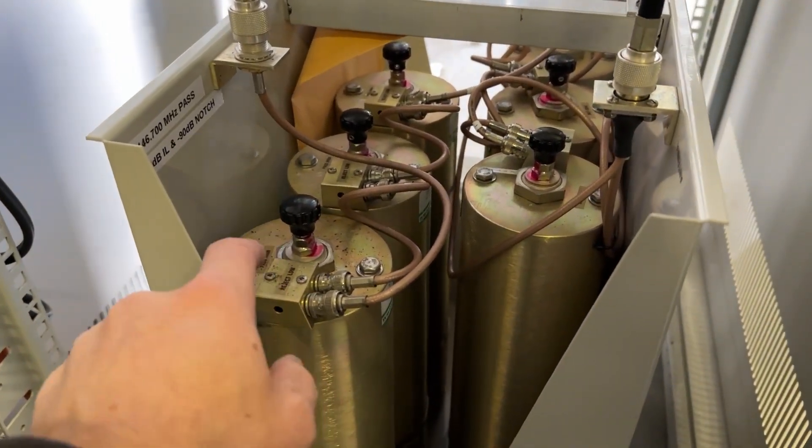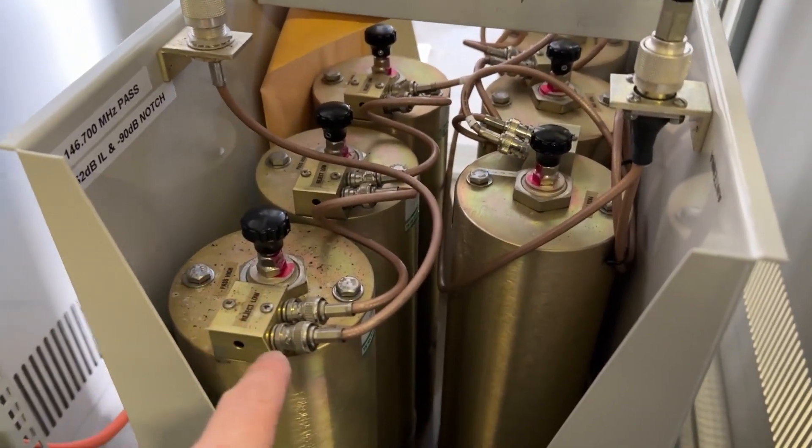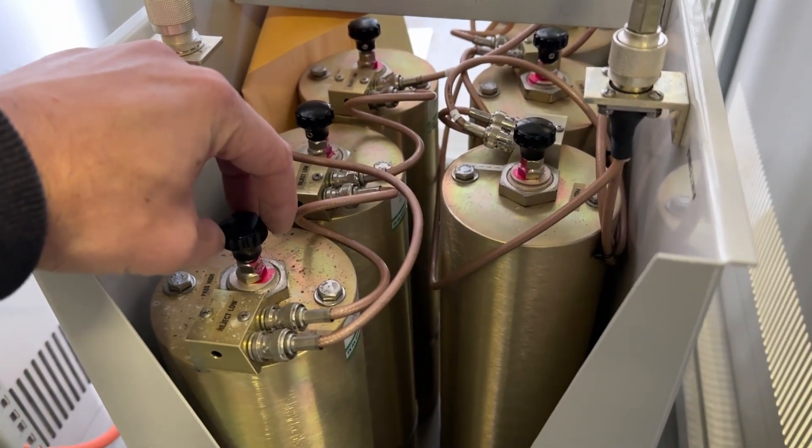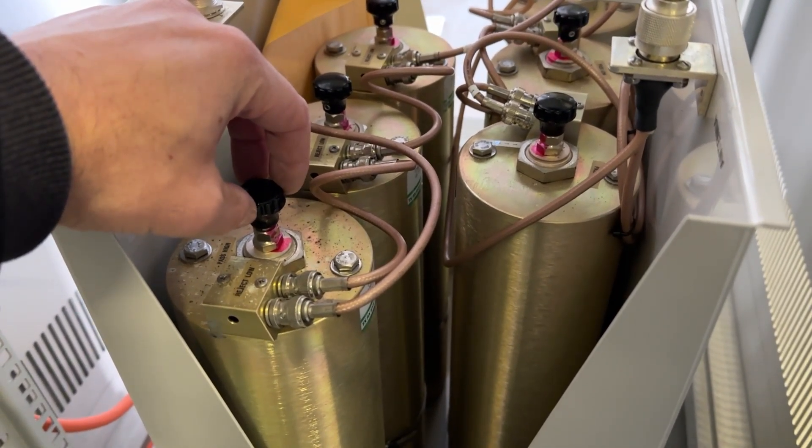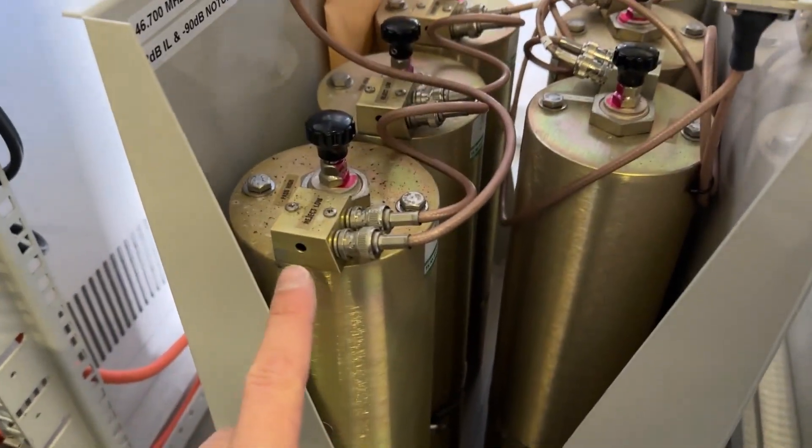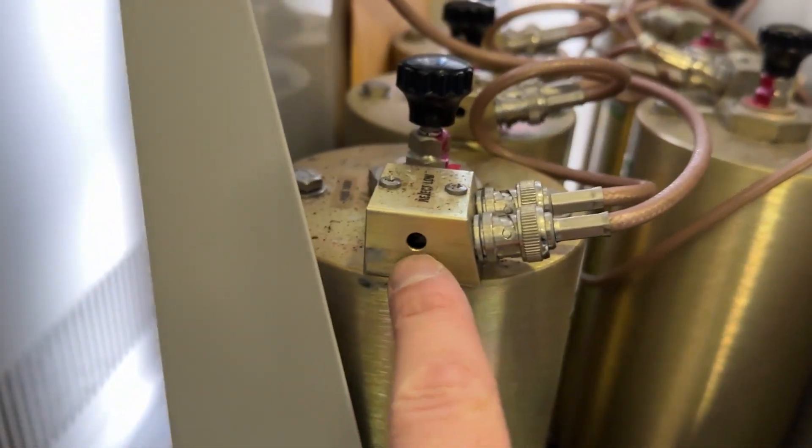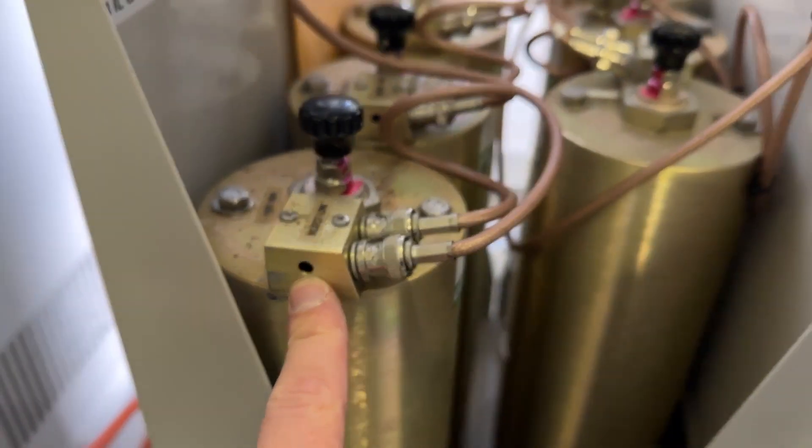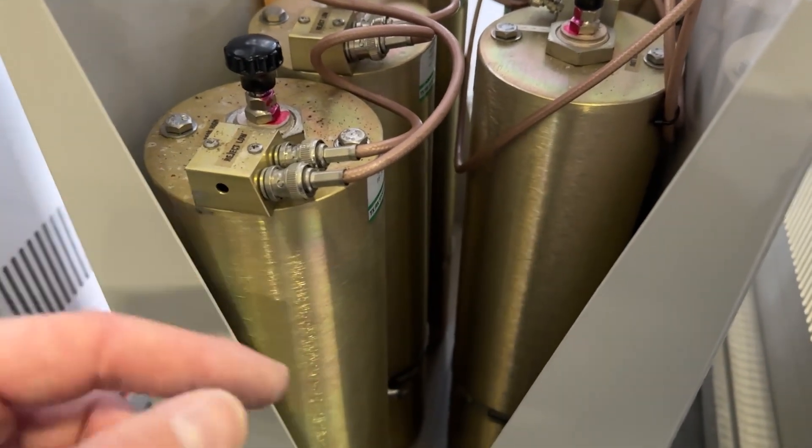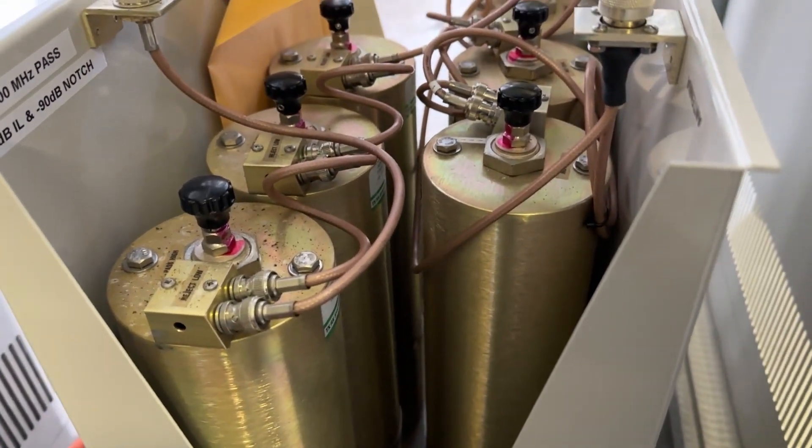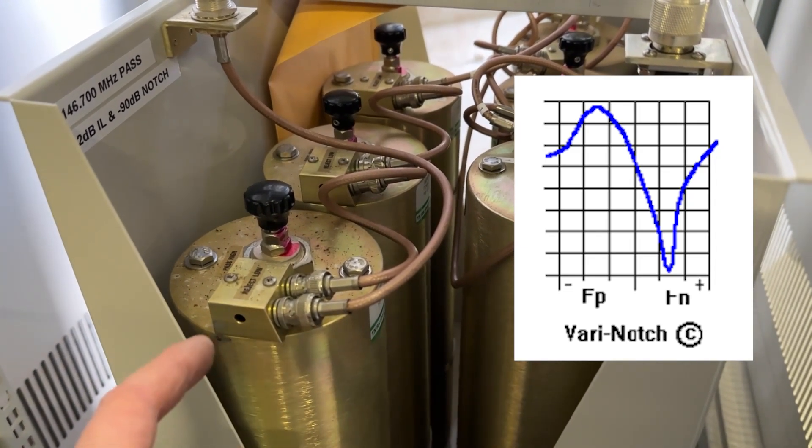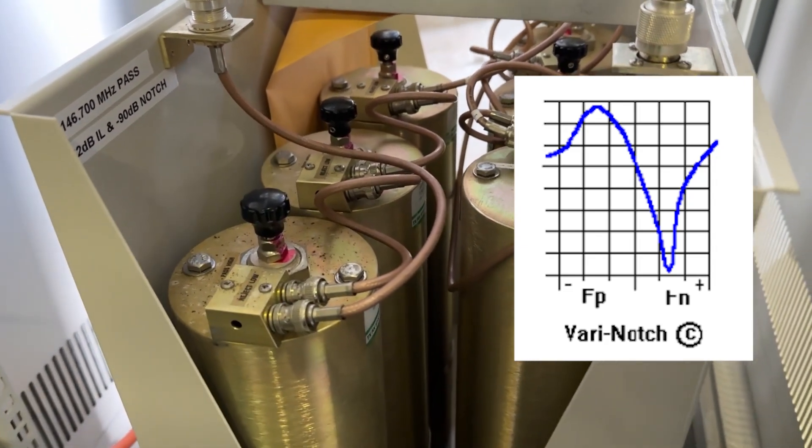So these are tuned, these are vari-notch filters. So basically what you do is you tune this variable plunger up and down for the pass, for the frequency you want to pass. And then once you've done that, then there's a little capacitor in here which you adjust for your notch. So if you look on a spectrum analyzer and I can overlay some examples on the video here of what I'm talking about, then you can adjust those so that they're smack on frequencies.